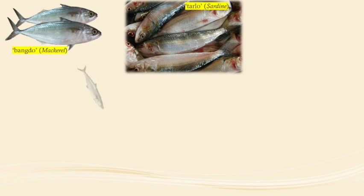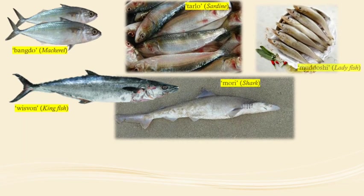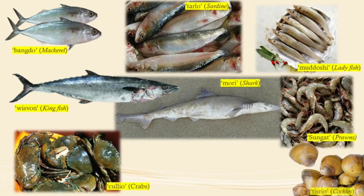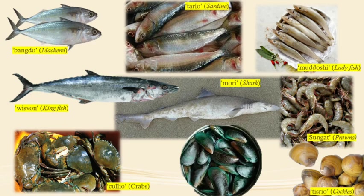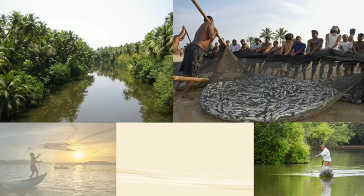The important fish found in Goa are mackerel, sardine, kingfish, shark, ladyfish, crabs, prawns, cockles, mussels, etc. You must be knowing the names in the regional language, i.e. Konkani. Goa has many rivers and creeks, and fishing is also carried out in the rivers and creeks.